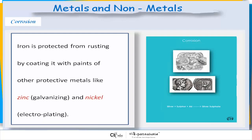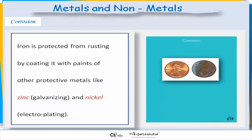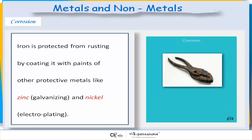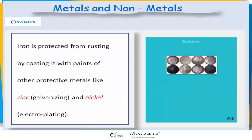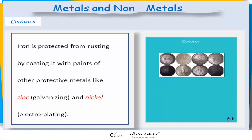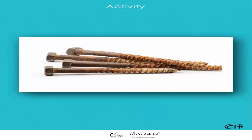Iron is protected from rusting by coating it with paints or other protective metals like zinc and nickel, which is called galvanizing and electroplating.